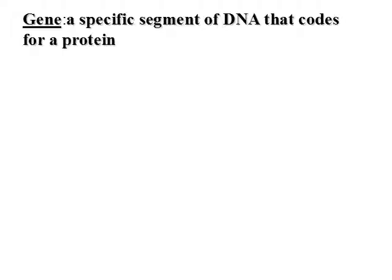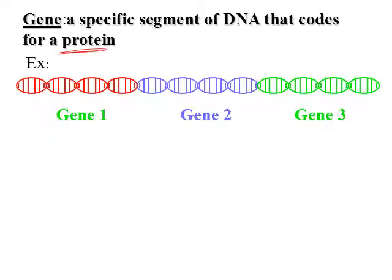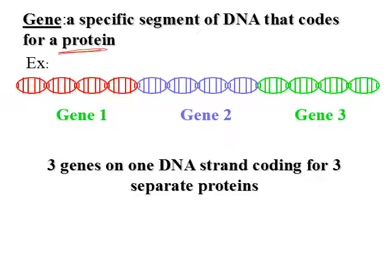Now we're going to connect that whole bit on proteins to DNA and where proteins come from. First, let's talk about genes. Genes are a specific segment of DNA that codes for proteins — this is what makes DNA so vital. DNA is basically the instructions for making proteins. In one strand of DNA you can have multiple genes: gene one codes for protein one, gene two codes for protein two, gene three codes for protein three.